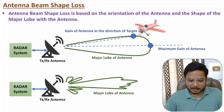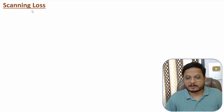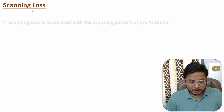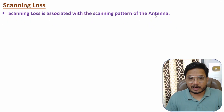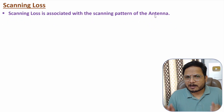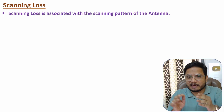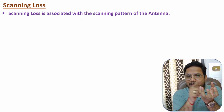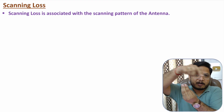Next is scanning loss, which is associated with the scanning pattern of the radar system. Radar scans an area using well-defined scanning patterns — some radar rotates to scan the surrounding area, while others scan the front area from top to bottom and back.